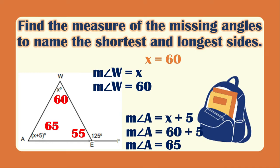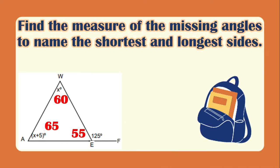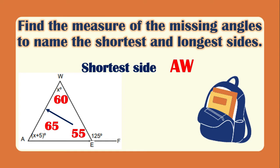Now that we have all interior angles we can name the shortest and longest sides. The smallest angle is 55 degrees, so the opposite is the shortest side AW. The largest angle is angle A which is 65 degrees, opposite the longest side WE.